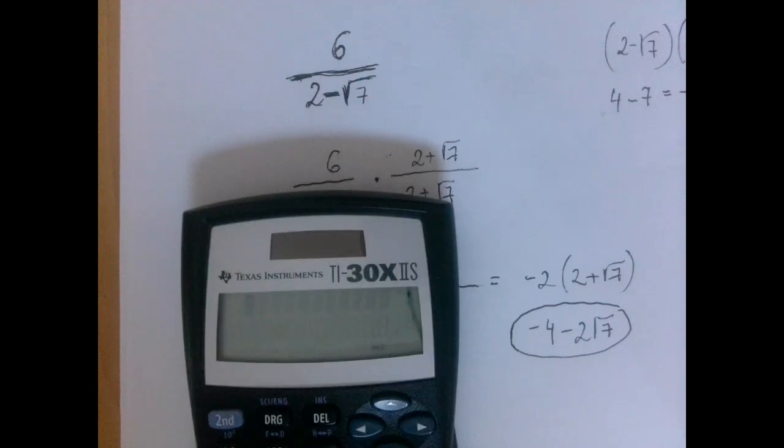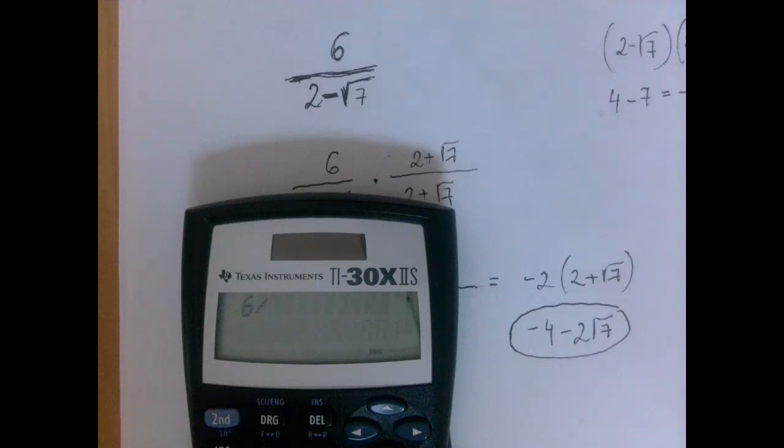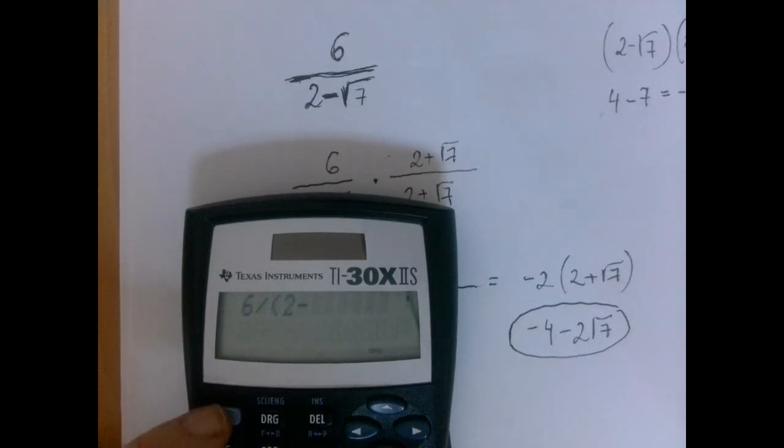So let's see if we can do that. So if we say 6 divided by, and we will now enter 2 minus root 7, it's very important that we open a parenthesis. So then 2 minus, now when we say square root, the square root sign itself will open another parenthesis. So we need to close two of them now.